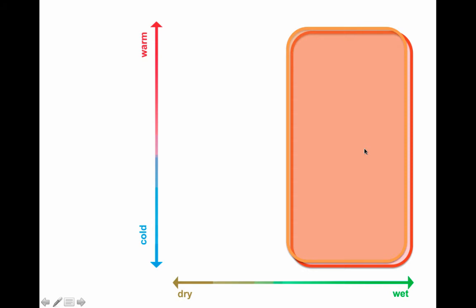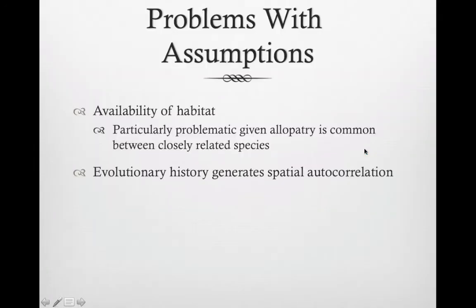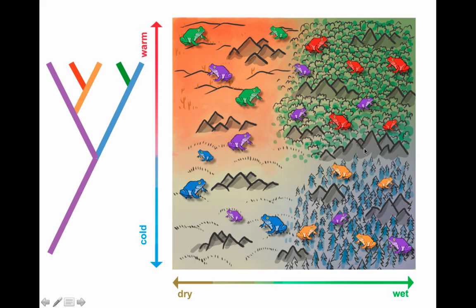So that can be quite problematic, and it's just one of those things you've got to keep in your head at all times when you do all this stuff. Another problem is that evolutionary history itself generates spatial autocorrelation in species ranges. So basically if we've got allopatric speciation, then there's a positive correlation between evolutionary distance and range overlap. So younger species overlap less.